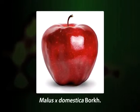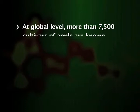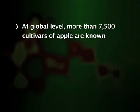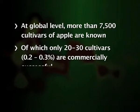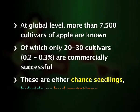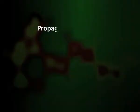Cultivation of apple seems to have been practiced by Greeks and Romans, and as a result of their travel and invasion, apple cultivation spread to Europe and Asia. At a global level, more than 7500 cultivars of apple are known, of which only 20 to 30 cultivars representing 0.2 to 0.3 percent are commercially successful. These are either chance seedlings, hybrids, or bud mutations. An apple cultivar is thus either a hybrid or a sport and does not propagate true to seed.